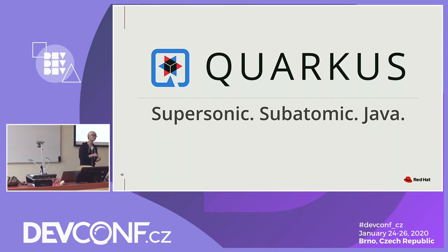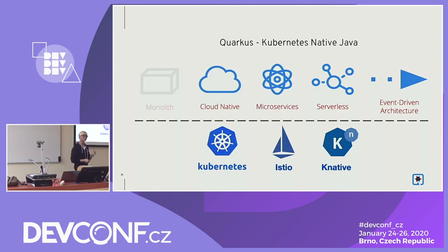The subtitle is 'Supersonic Subatomic Java.' Supersonic came from the Queen song, subatomic means very small and tiny, and it's all based on Java. Which means if you are a Java developer, you don't need to learn anything new — it's pretty familiar. You use Maven plugin, Maven commands, and the same APIs. You can even run Spring Boot applications on top of it.